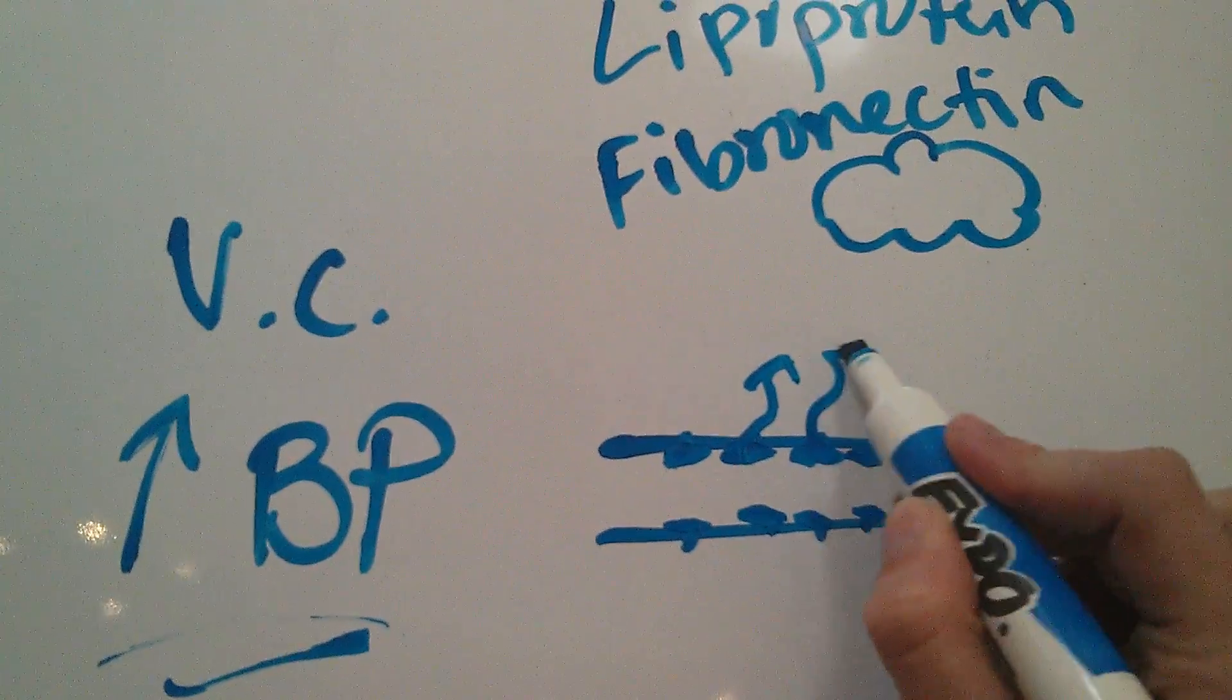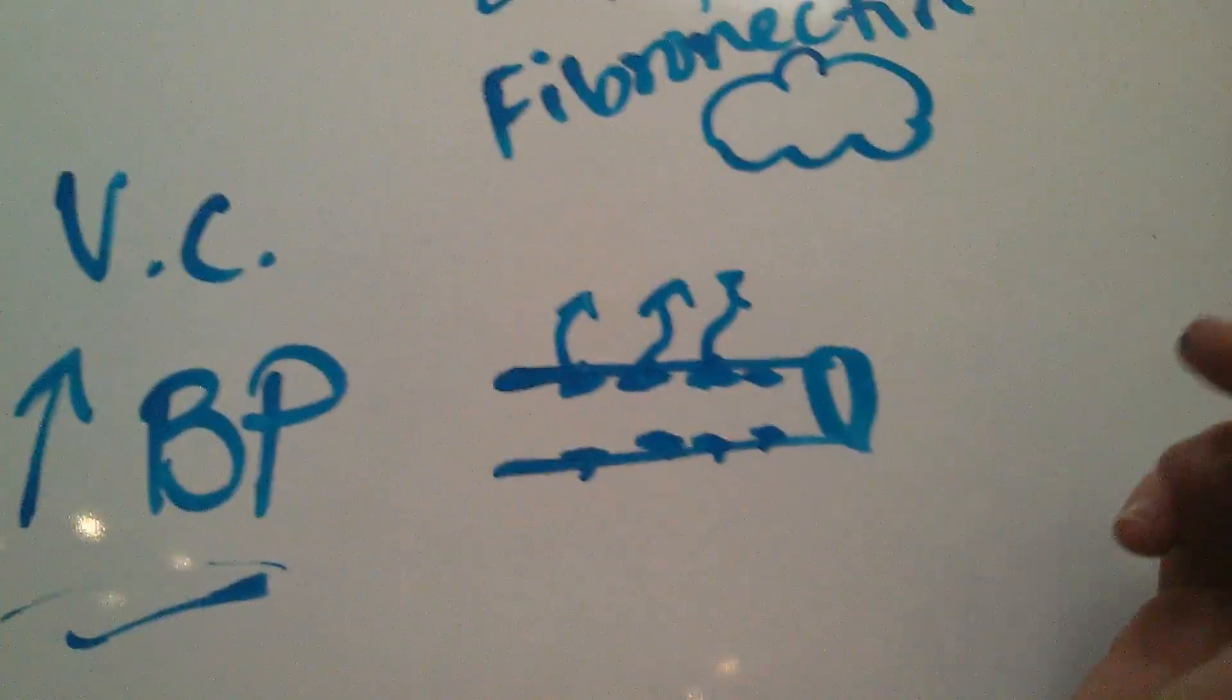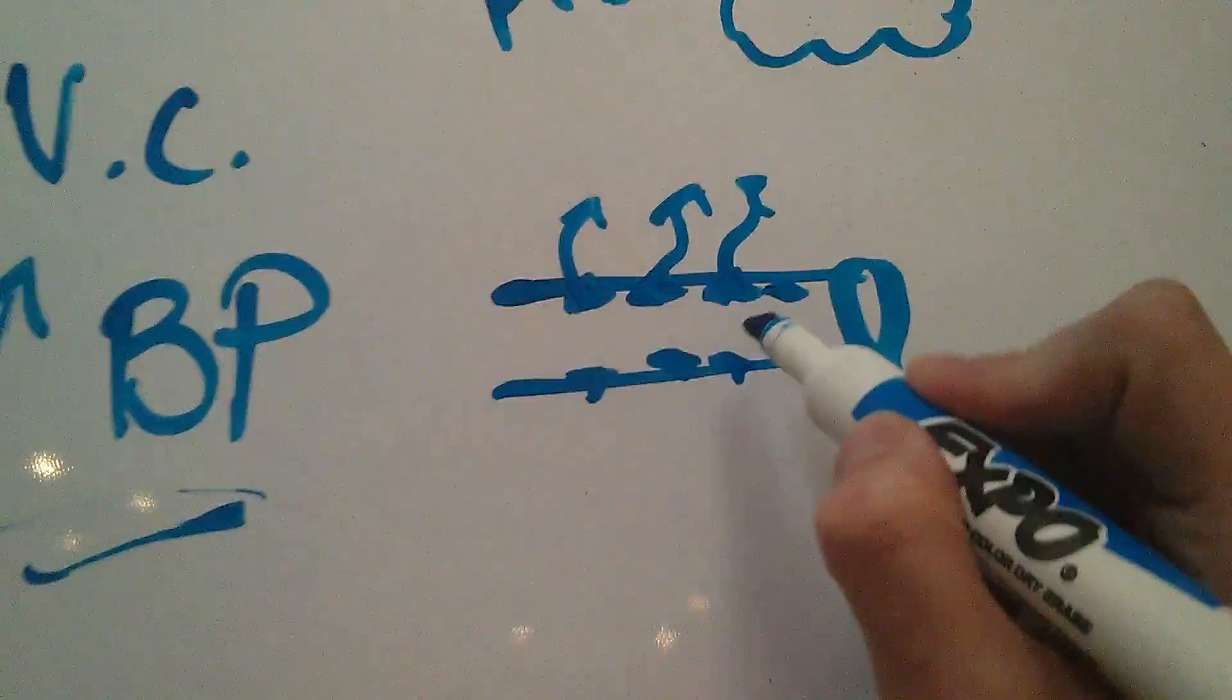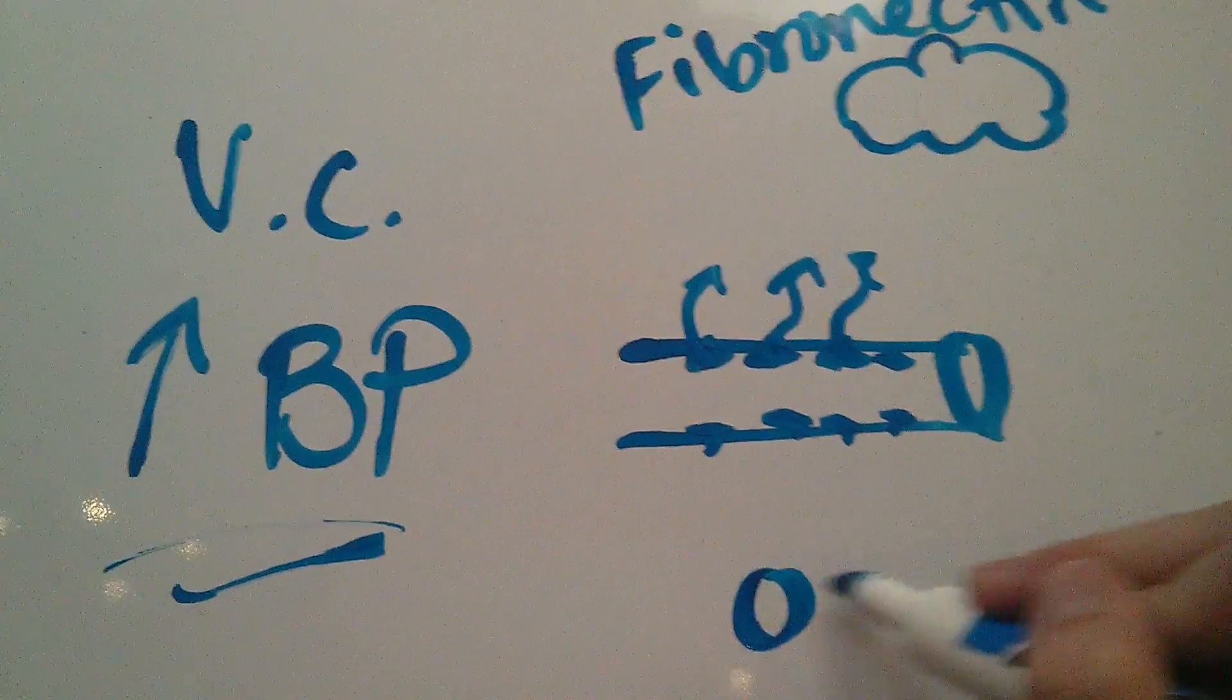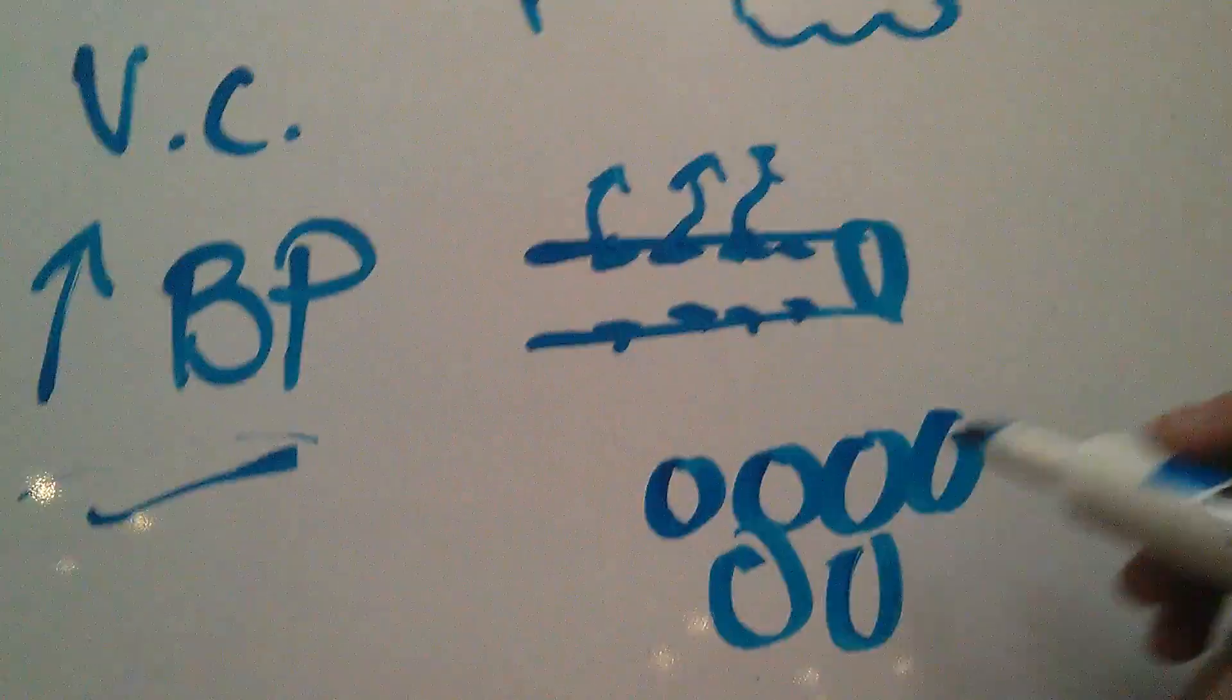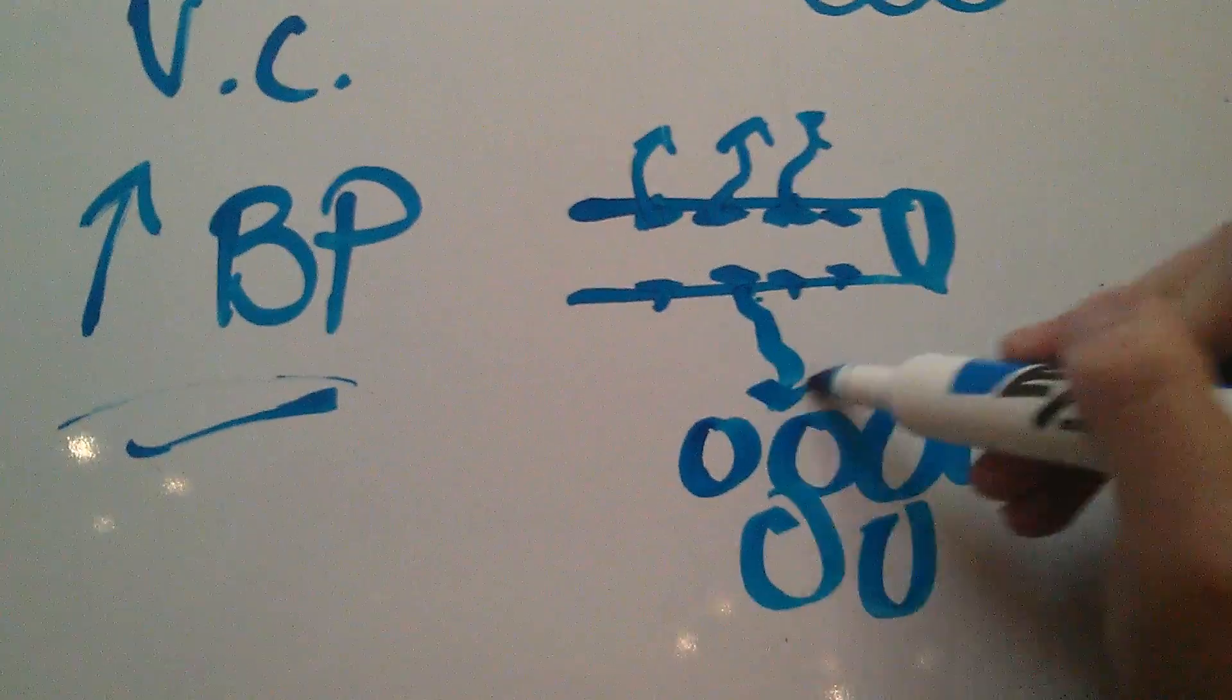The fibronectin ends up leaking out of the holes and moving from the intravascular, which means inside the vessel, into the interstitial space or the intracellular space. Like if these are the cells, the fibronectin starts leaking out into the cells.